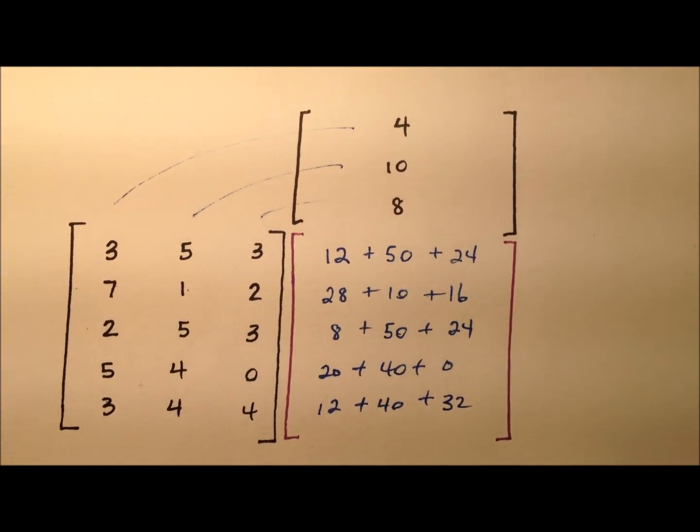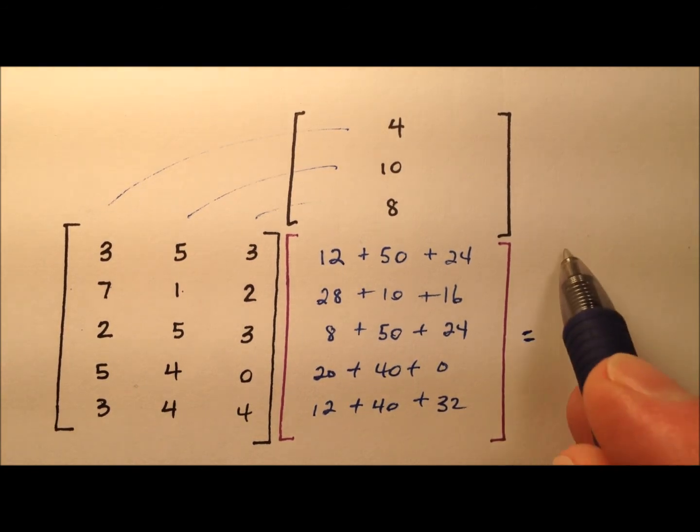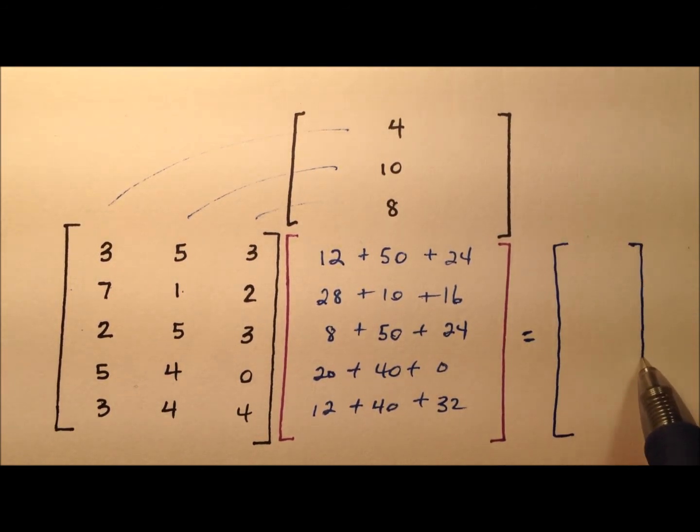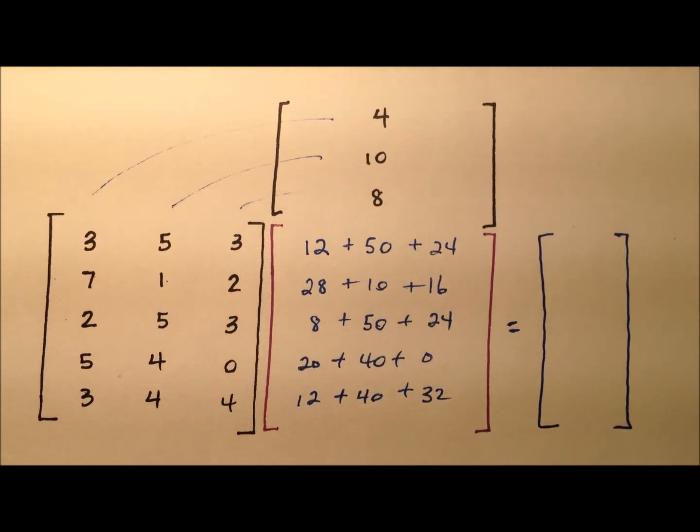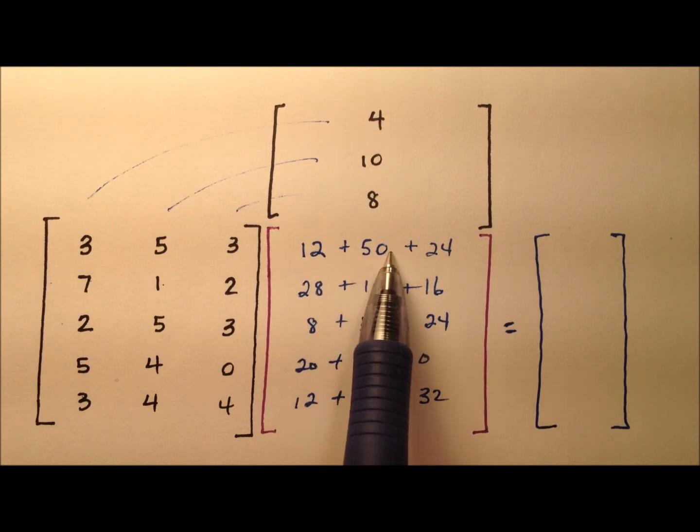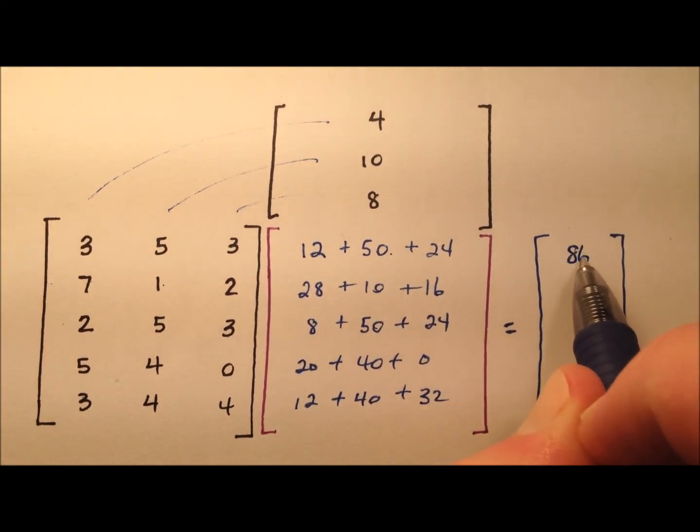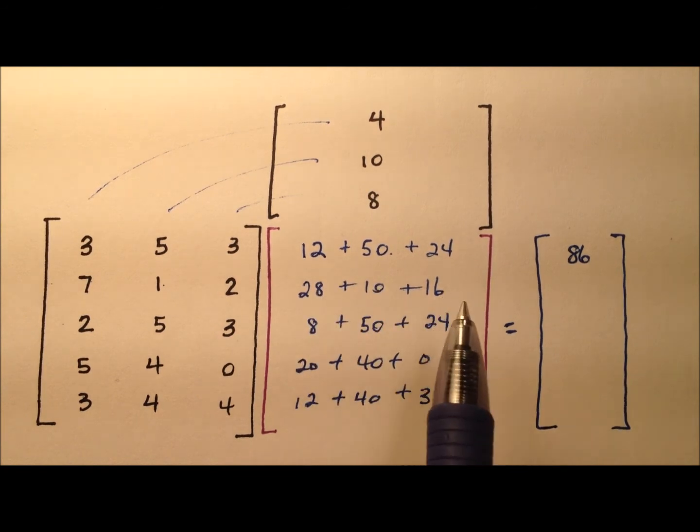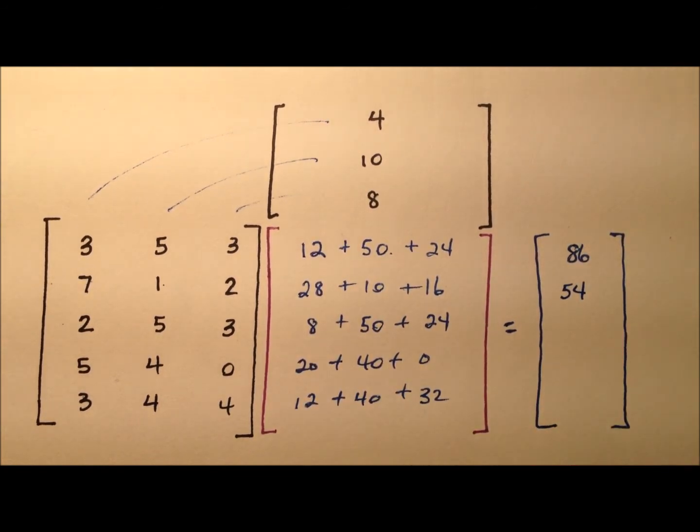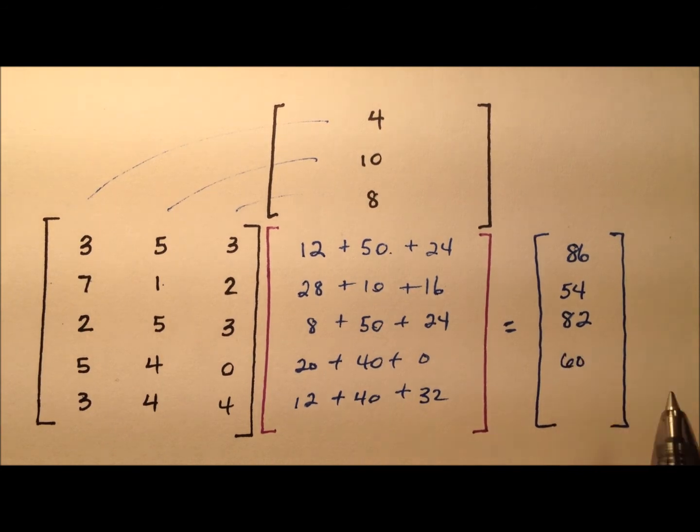This is what this matrix multiplication will look like. And we can go ahead and finish it up by doing all of these sums. And we can figure out how much she made each day. So here we have 12 and 50 and 24. That looks like 86 for that first guy. 28 and 10 and 16 will be $54 on Tuesday. Wednesday is 8 and 50 and 24, that's 82. Thursday looks like just 60. And then Friday to finish up looks like 84. This allows us to get a numeric view of just how much she made each of these days.